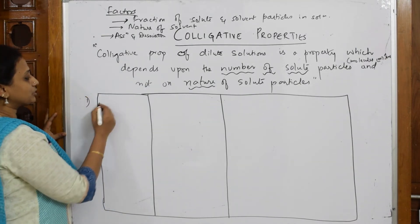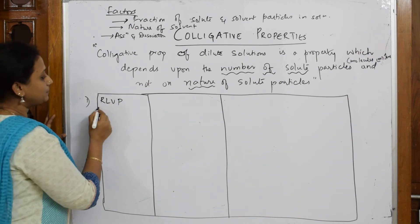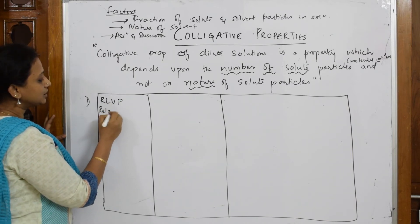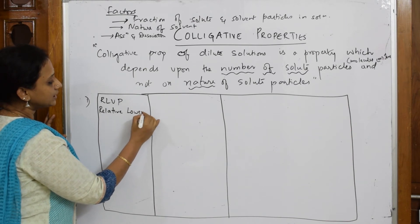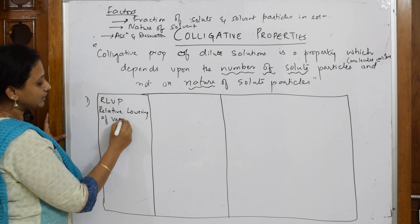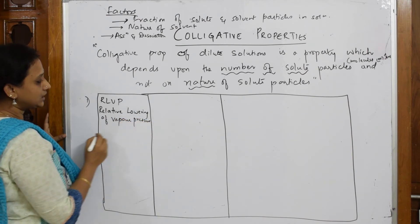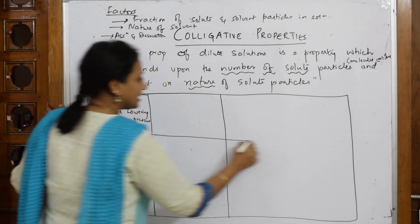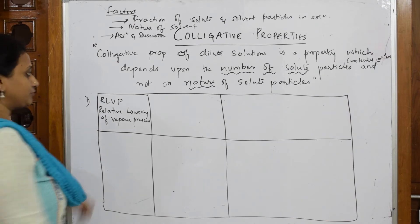The first type of colligative property is called RLVP. RLVP is nothing but Relative Lowering of Vapor Pressure. When I have to write the formula—I am just giving you the general framework of the whole colligative properties, but it is going to take time for you to understand the concept.